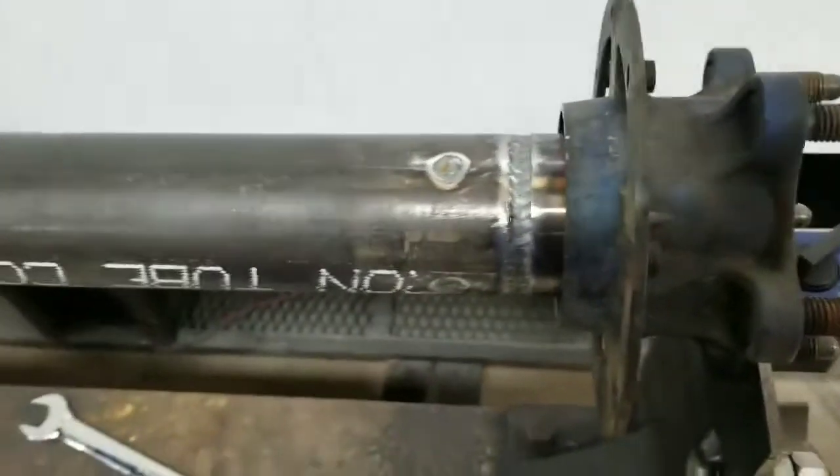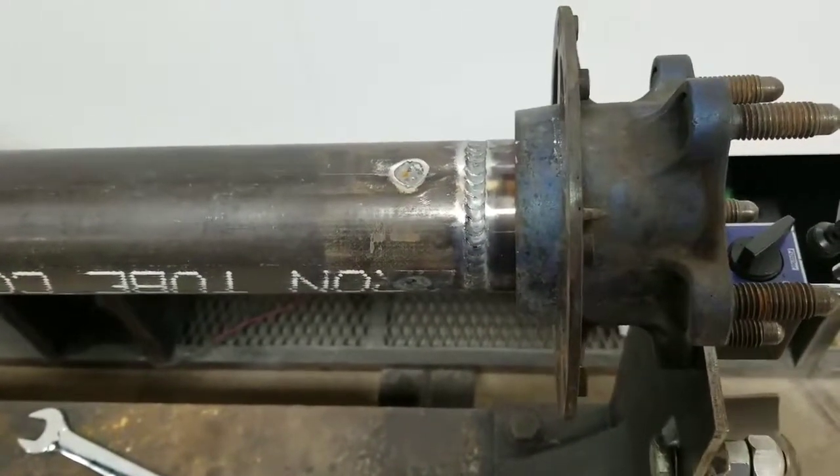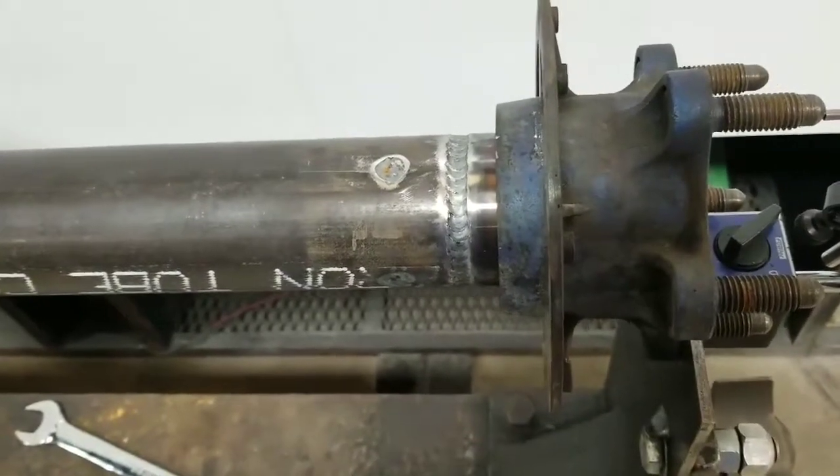Now I see a lot of people advertising rear ends for sale and they say they're straight or whatever. Now there's a couple of ways to check them and you don't have to have any fancy tools.